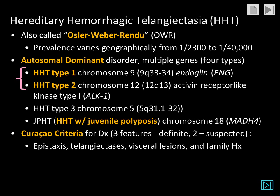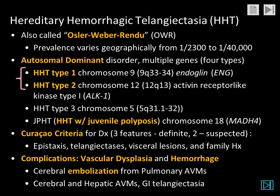Diagnostic criteria include the presence of three features from the Curaçao list, including epistaxis, telangiectasia, visceral lesions, and a family history. The telangiectasias may be in the mucous membranes or in the skin. Complications include vascular dysplasia and the possibility of hemorrhage, cerebral embolization from the pulmonary AVMs, and both cerebral and hepatic arteriovenous malformations.